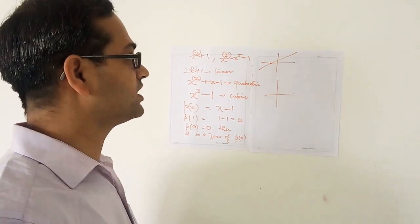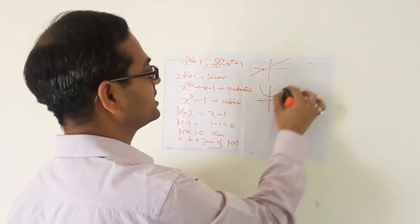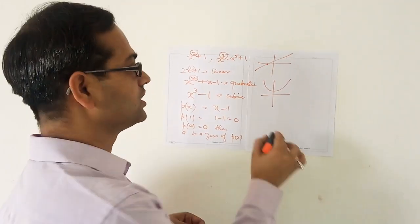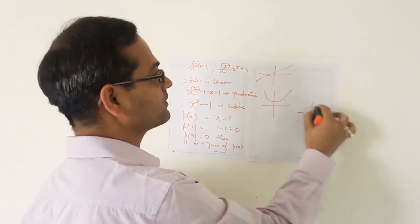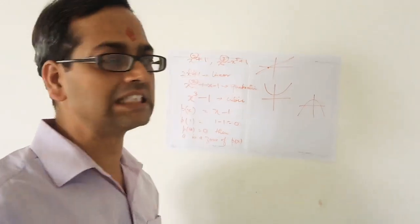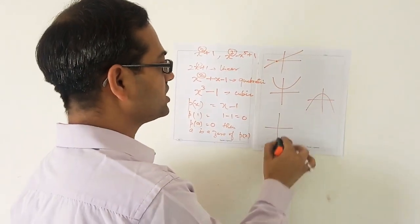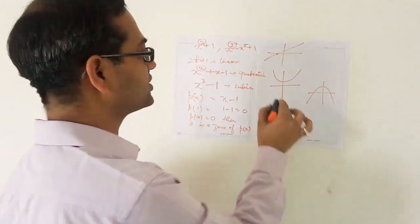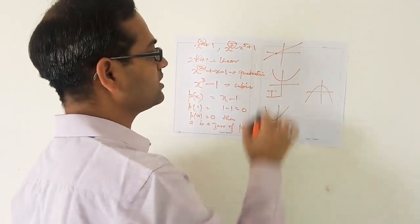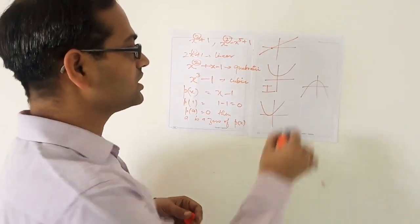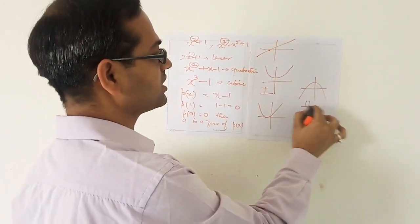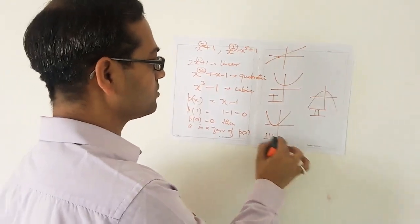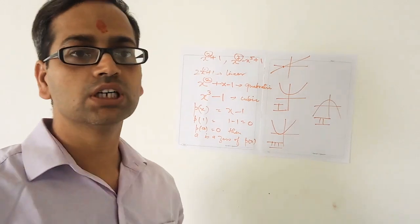For a quadratic polynomial, the graph is a parabola. This parabola opens upward if the coefficient of x² is greater than 0, and opens downward if the coefficient of x² is less than 0. I have drawn three different cases: the first where the graph does not touch the x-axis at all, the second where it touches at two distinct points, and the third where it touches at only one point.